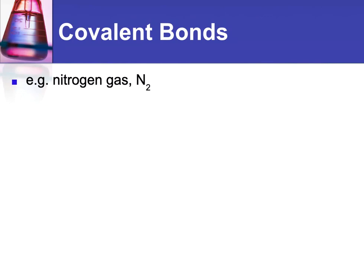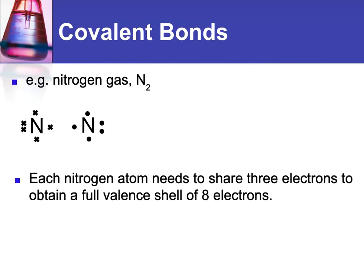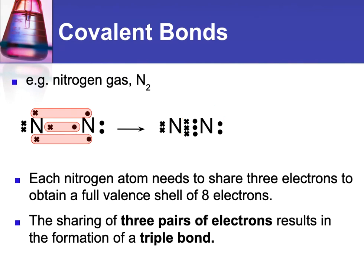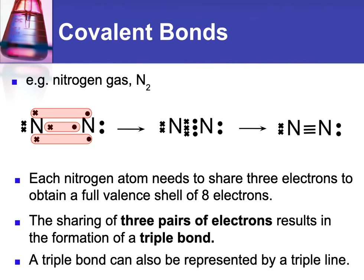Another example is nitrogen gas. Each nitrogen atom has five valence electrons, so it needs three more. It's going to share those three unpaired electrons, and they move in between — each nitrogen now has eight. When you're sharing three pairs of electrons, this is called a triple bond. You can also represent a triple bond with a triple line. Each line represents two electrons, so in a triple bond there are six electrons involved — three pairs.